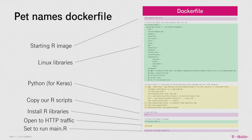This is the pet names Dockerfile for the API that Jacqueline built in her talk yesterday. We just have a starting image — we use Rocker, which is just an R Docker image. Then there are some Linux libraries, we have to import Python because Keras runs on Python. Then we copy over our R scripts, install our libraries, open up the port, and then just say "run the main function."